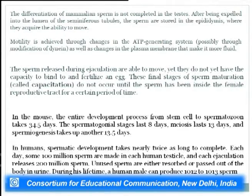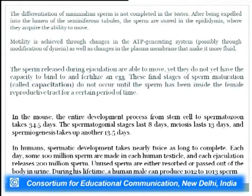In the mouse, the entire development from stem cell to spermatozoan takes 34.5 days: the spermatogonial stage lasts 8 days, meiosis lasts 13 days, and spermiogenesis takes about 13.5 days. In humans, spermatic development takes nearly twice as long. Each day approximately 100 million sperms are made in each human testicle, and each ejaculation releases around 200 million sperms.